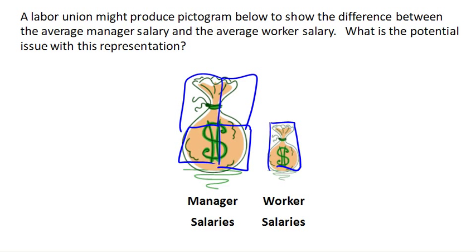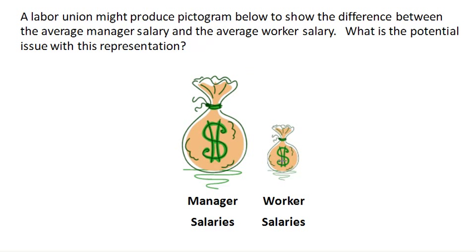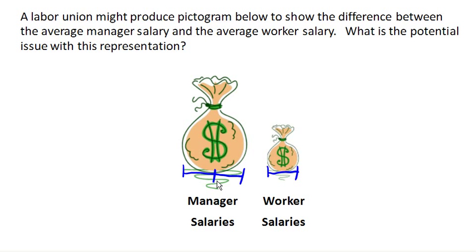But it's sometimes hard to tell, because it could be that the manager's salaries are only twice as big as the worker's salaries, and the person creating this representation said it's only twice as big. That visual distortion of area versus length really makes it hard to tell based on the graphic what's really going on. So this type of pictogram is not a good representation.